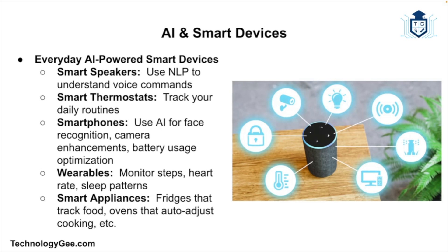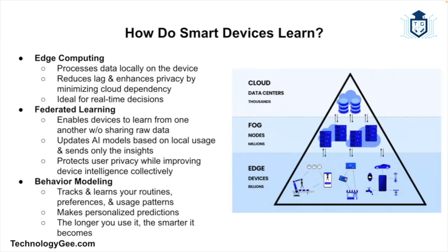Smart appliances are also part of this world. There are refrigerators that can tell you when your food is expiring, washing machines that choose optimal cycles based on load type, and AI ovens that recognize food and adjust cook time. Smart homes aren't just about convenience — they're about efficiency, personalization, and proactive decision making.